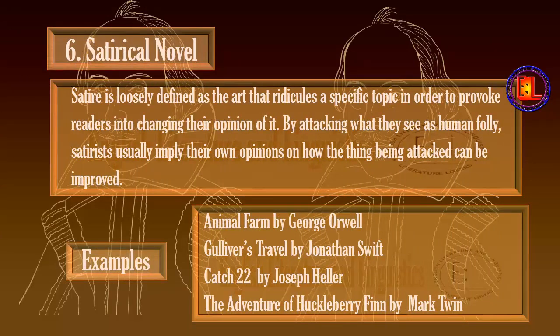Number 6: Satirical Novel. Satire is loosely defined as the art that ridicules a specific topic in order to provoke readers into changing their opinions of it, by attacking what they see as human folly. Satirists usually imply their own opinions on how the thing being attacked can be improved. Examples are Animal Farm by George Orwell, Gulliver's Travels by Jonathan Swift, Catch-22 by Joseph Heller, and The Adventures of Huckleberry Finn by Mark Twain.